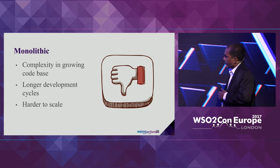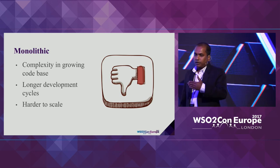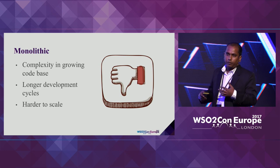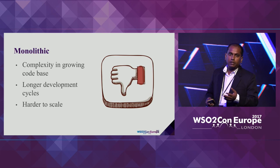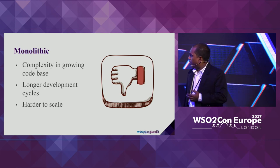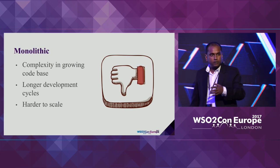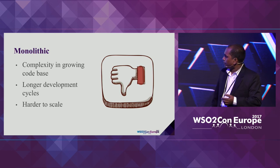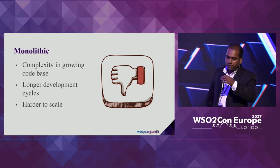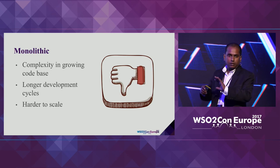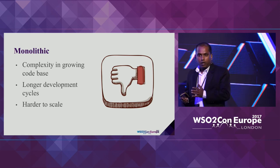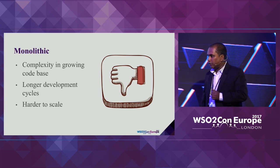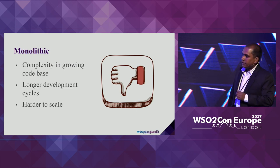The disadvantages include complexity in the growing code base. Making everything into a single code base is not ideal if you have a growing code base — over the years you add more features, more code, and it becomes hard to keep track. Since the code base becomes very complex, whenever we want to innovate and move through the delivery pipeline it will take time. When it comes to scaling, if a single component of your monolithic application gets more load, you need to scale out the whole application — you can't scale out just one component.